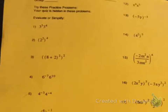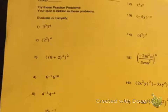So now we're going to begin to apply these rules. Number one is multiplication, so you're going to add the exponents. So 3 plus 4 is 7, you keep the base and add the exponents, which gets 3 to the 7th.